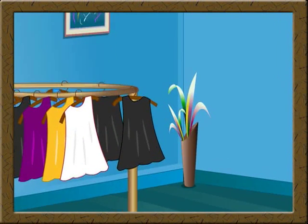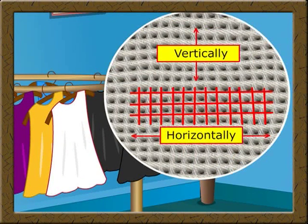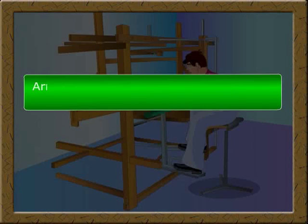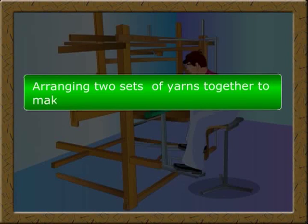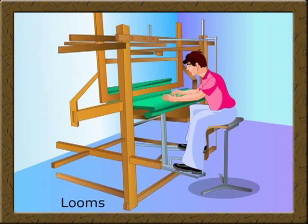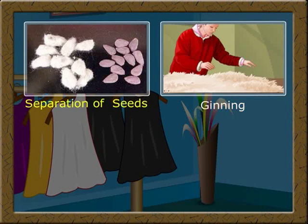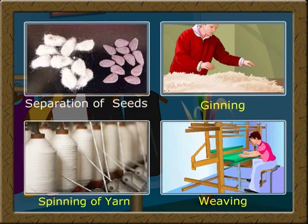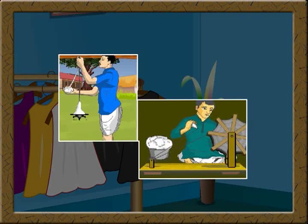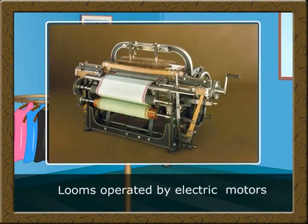Cloth is made up of two sets of yarn arranged together, horizontally and vertically. This process of arranging two sets of yarn together to make a fabric is called weaving. Weaving of fabric is done on looms. In cotton mills, separating of seeds, ginning, spinning of yarn, and weaving are done by machines. Some professionals also make fabric on hand looms. Some looms are operated by electric motors — they are called power looms.